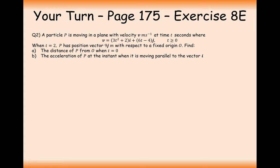Now a student practice question. We have a velocity vector of (3t squared + 2)i plus (6t minus 4)j. When t equals 2, the position vector of P is 9j with respect to a fixed origin O. Find the distance of P from O when t equals 0. We have velocity, so we integrate to find the position vector.